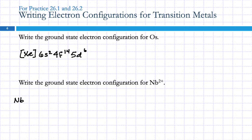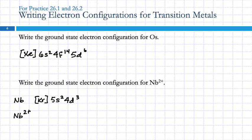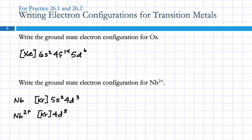Niobium is in period 5, element 41. So period 5 would be krypton, and then we've got 5s2 and 4d3. For Nb2+, what electrons are going to be lost? The 5s electrons — the valence electrons with the largest principal quantum number. 5 is bigger than 4, and even though the d ones got filled in afterwards, it doesn't matter. We're taking out the 5s electrons. This is a 2+ charge so we remove 2 electrons, giving us [Kr] 4d3 — that's the niobium 2+ ion.